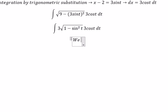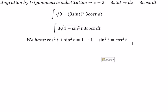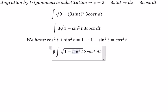Next, we have cosine t squared plus sine t squared equal to number 1. So we got 1 minus sine t squared equal to cosine t squared. This one we change for cosine t squared. The square root of cosine t squared you got cosine t. Cosine t multiply with cosine t gives cosine t squared.